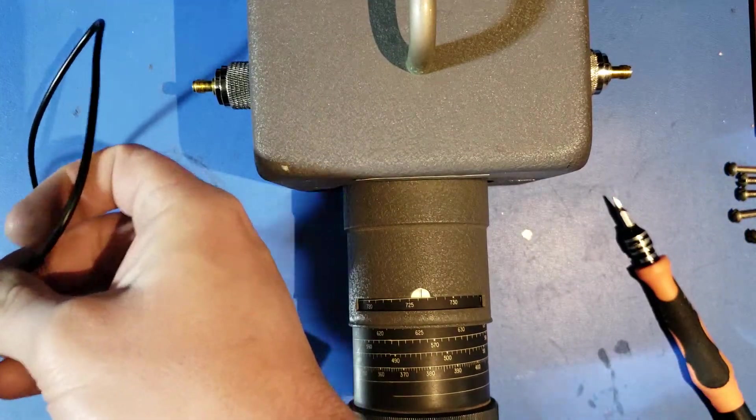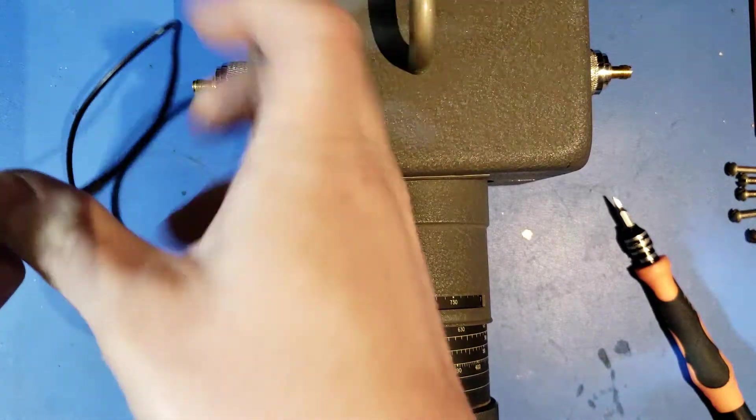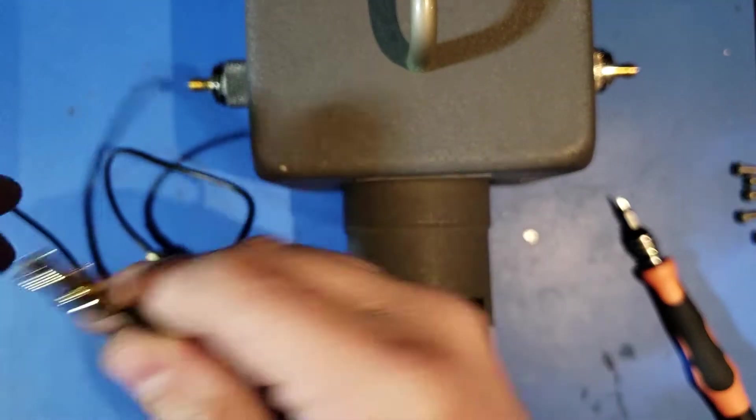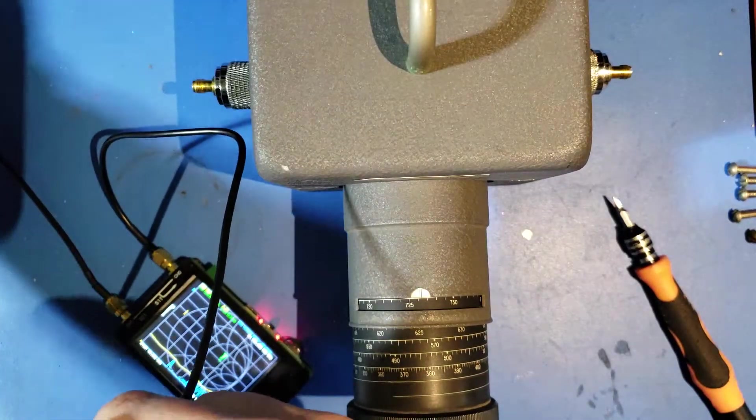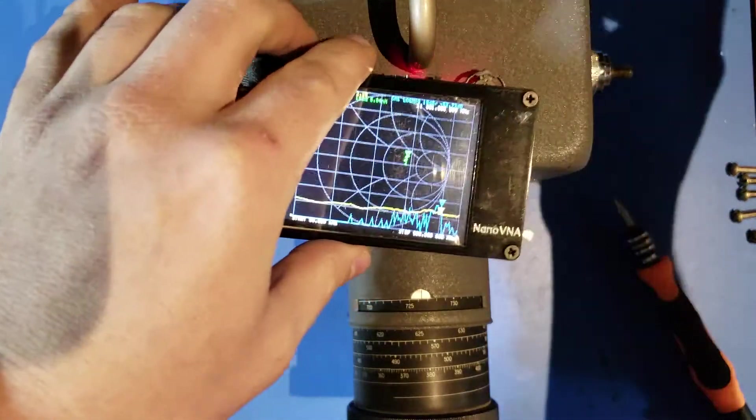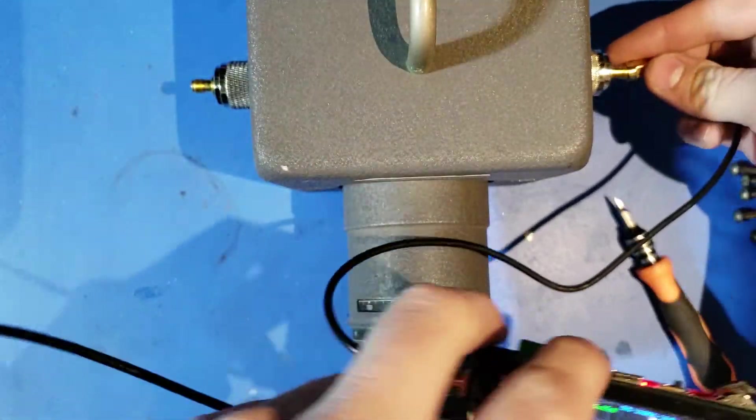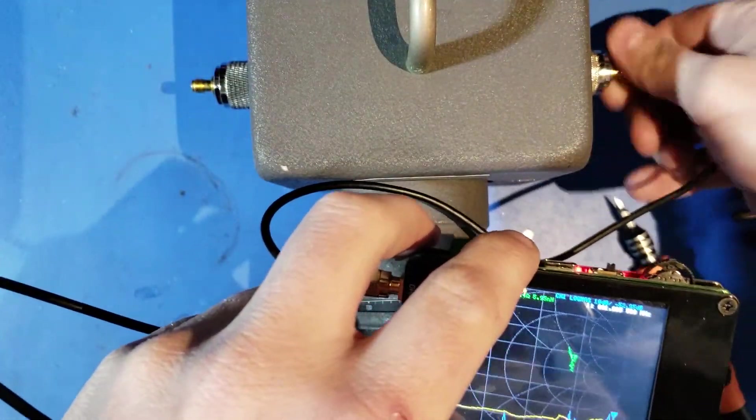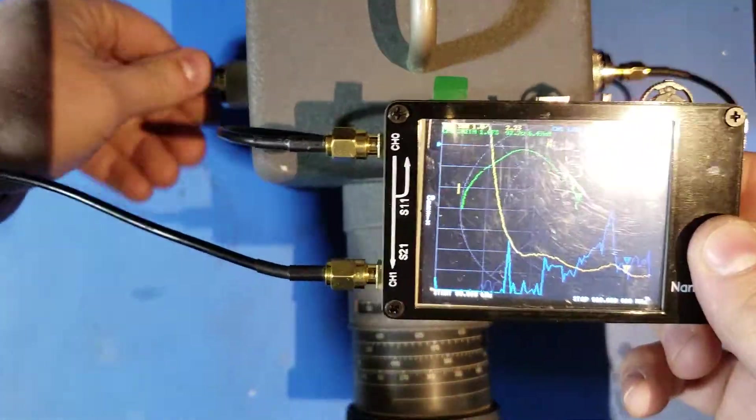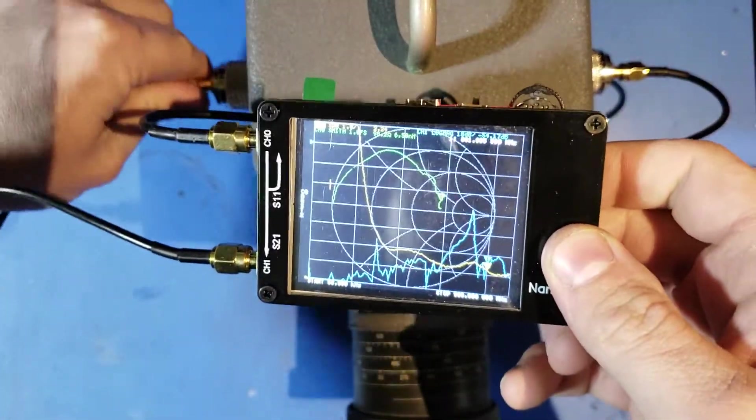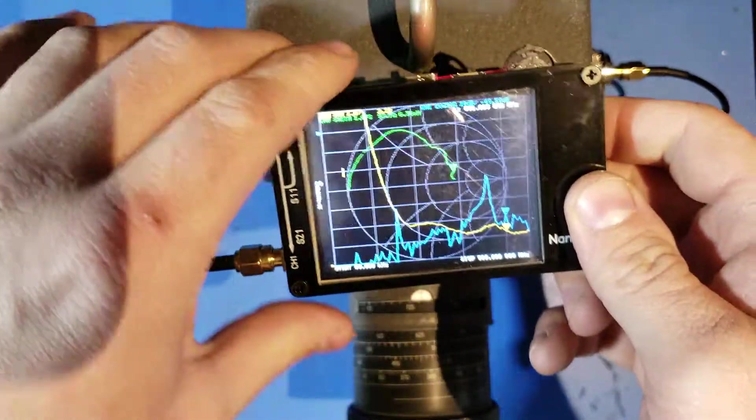Now, the calibration kit that comes with the NanoVNA relies on the use of this female SMA connector right here, but we're not going to be using that SMA connector when we're characterizing the filter. So that will be a source of error here, but we're just trying to get a rough measurement and see this device work. We're not trying to make a precision RF measurement. We're just fooling around here.